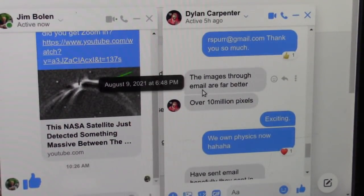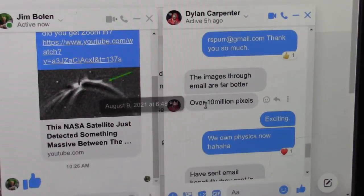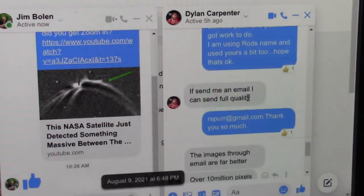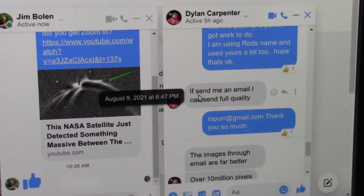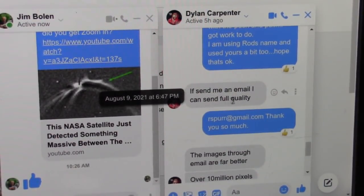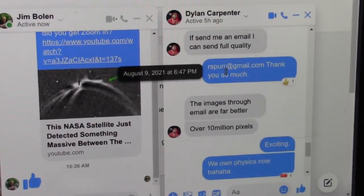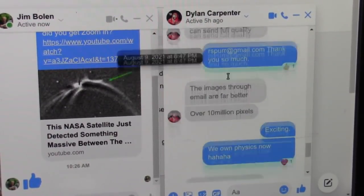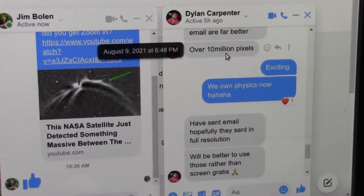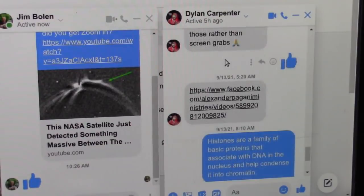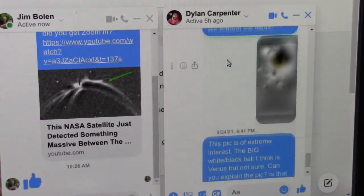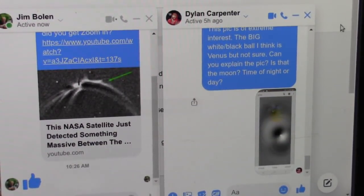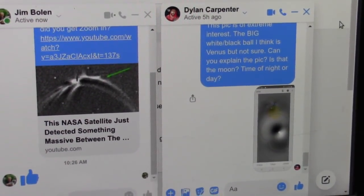He says the images, though, through email are far better, over 10 million pixels. Whatever that means. If I send you an email, I can send full quality. Okay, so I see what he's doing. I sent him my email so that he can send the full quality, 10 million pixels. And, you know, we went quite through a lot. Okay, I got this sent to me probably 10 times or more about this NASA satellite detected something massive between the Earth and planet Venus.